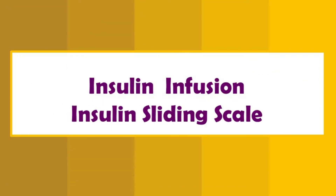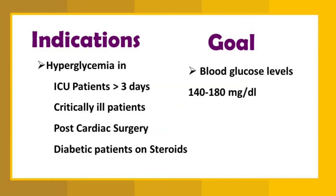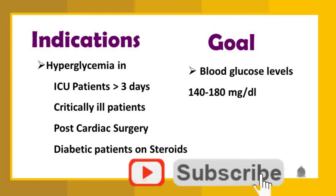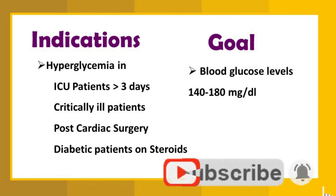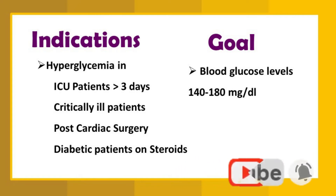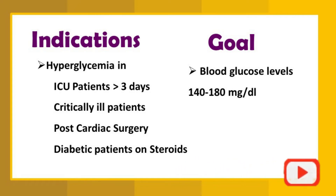Insulin infusion and insulin sliding scale are the same thing. When does a patient require insulin infusions? If hyperglycemic patients are in the ICU for more than three days, critically ill patients, patients who cannot take food, post cardiac surgery patients, and diabetic patients on steroids — for these categories of patients, we go for insulin infusions.